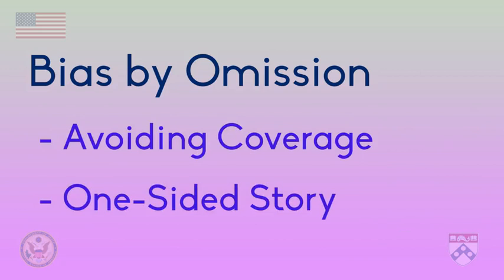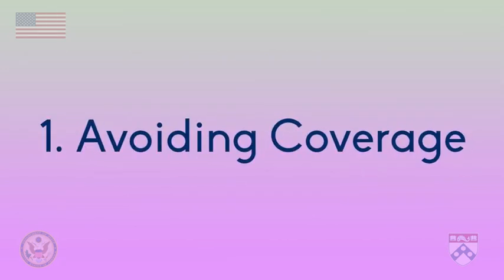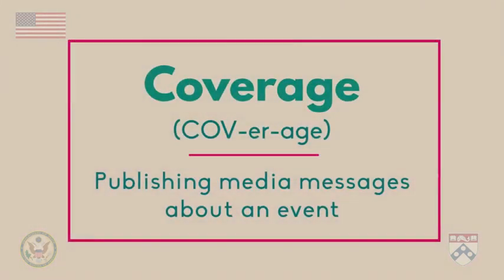The first type of bias by omission we're going to talk about is avoiding coverage of a story. Coverage of a story means publishing media messages about an event. So if a media company isn't publishing any stories about a situation, they're avoiding coverage of it.